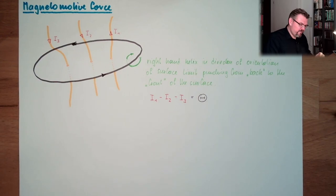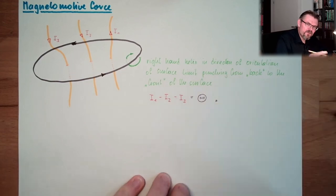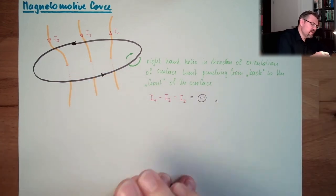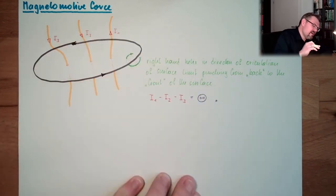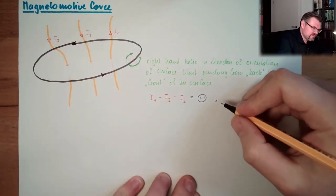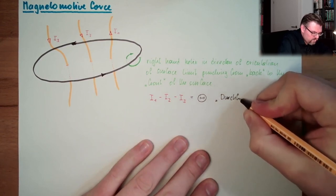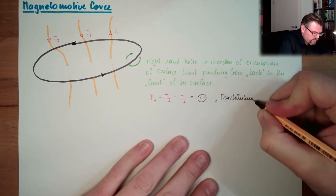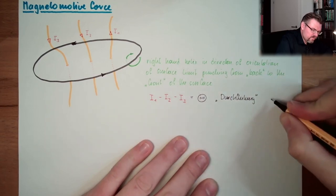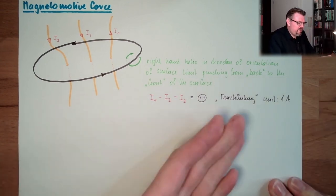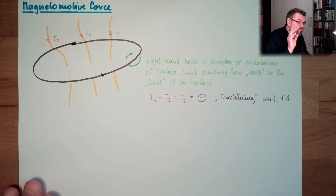There's a German word for it, it's called durchflutung. There is no English word for it. I call it durchflutung. The unit is 1 ampere, because if the current is an ampere, this durchflutung is also 1 ampere.